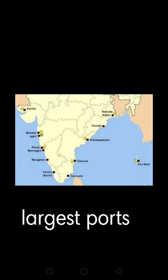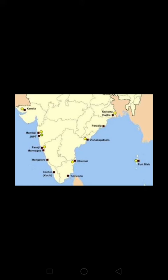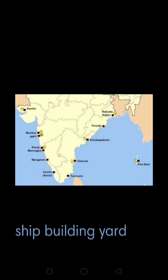Paradip, Vishakhapatnam and Chennai are the three largest ports on this coast. There is a big ship building yard at Vishakhapatnam.